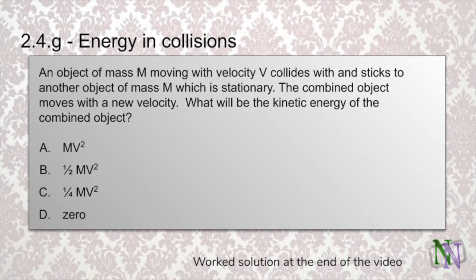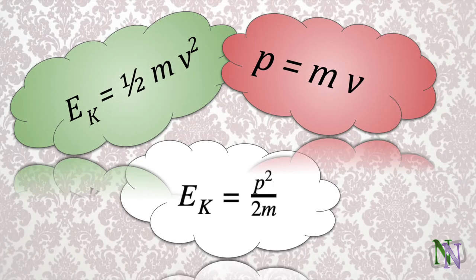Here is a typical multiple choice question on this topic. You should be able to show with algebra how the formulas for kinetic energy and momentum can be combined. If we know one of them and the mass of the body concerned we can find the other one. This can save you having to calculate a velocity.